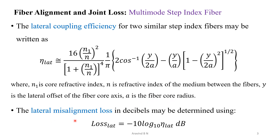The lateral misalignment loss in decibels is given by: Loss = −10 log₁₀(eta_lateral) in dB.